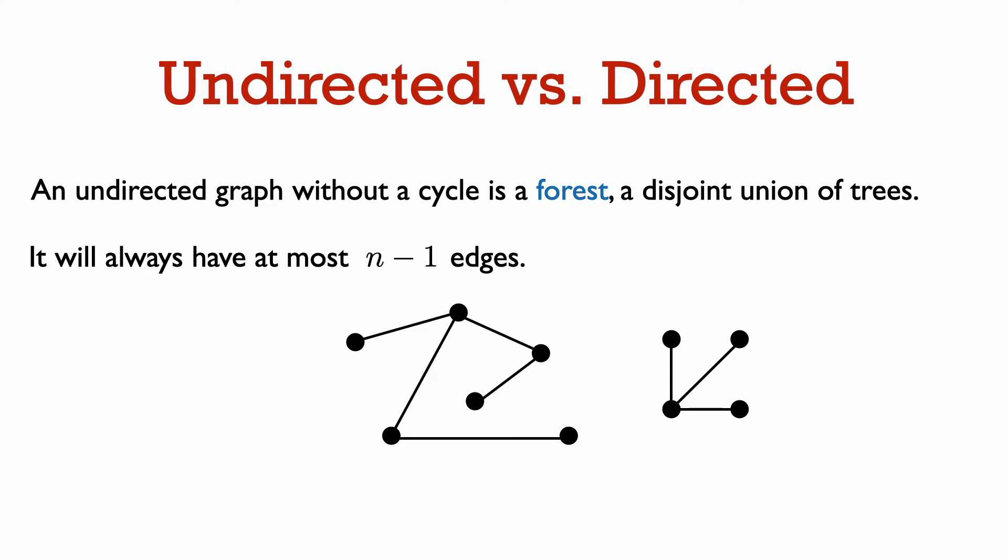This means that undirected graphs without cycles must be sparse. They cannot have a lot of edges. In fact, an undirected graph without a cycle will always have at most n-1 edges, which is realized by a tree.